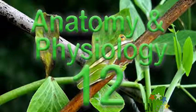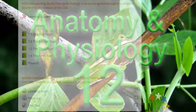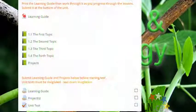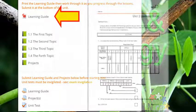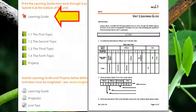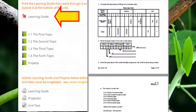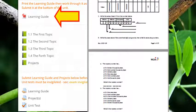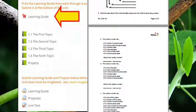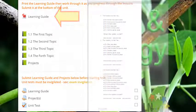Once ready to get started with the course content, head into the first unit. At the top of the unit, you'll find a learning guide. As you work through the lessons, you'll be using the learning guide to help you take notes and practice new skills. Keep your learning guide neat and well organized so it's ready for submission at the end of the unit.